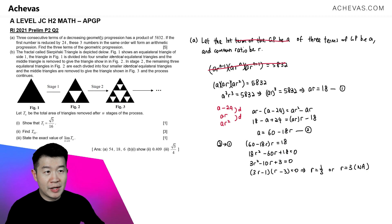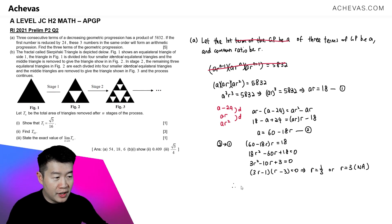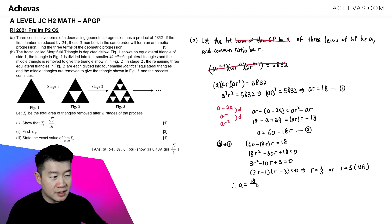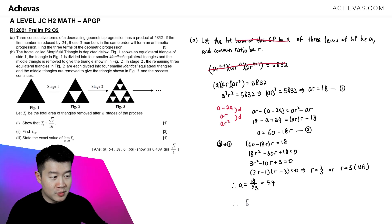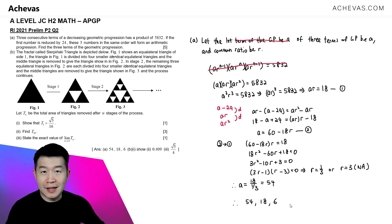We accept R equals one third. We can now find the first term: A equals 18 divided by R, which is 18 divided by one third, giving A equals 54. So the three consecutive terms are: 54, then 54 times one third equals 18, then 18 times one third equals 6.